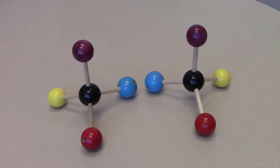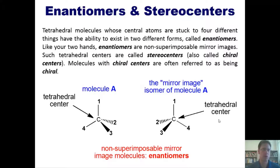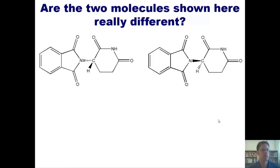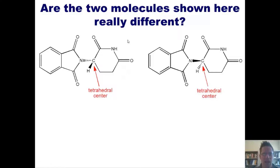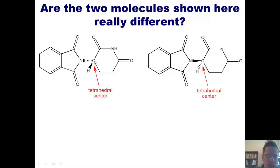We call such non-superimposable mirror images enantiomers, and enantiomers are very important in biological or living systems, as illustrated by an example I'll share shortly. That takes us to an important question: are the two molecules shown here really different? Look at them and see if you can answer the question. If you look closely, you'll notice they do have a tetrahedral carbon center, and that center is bonded to four different substituents.